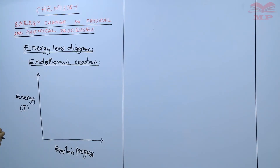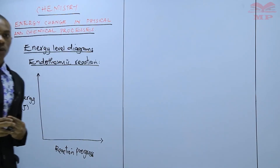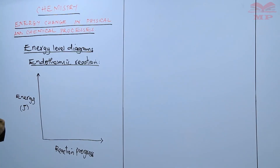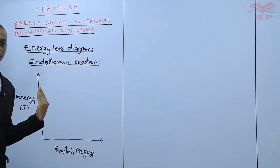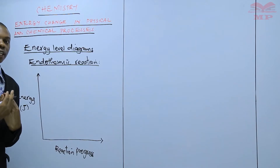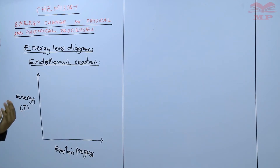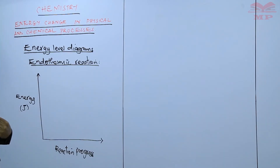The reaction is taking place, that's why we have the reaction progress. At the beginning of the experiment, we have the reactants alone. In an endothermic reaction, energy is gained from the surrounding. When you gain energy, the amount of energy increases. So you expect that the reactants will be at a lower energy compared to the products.